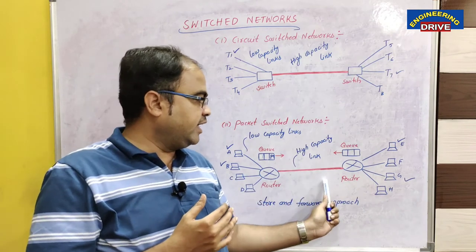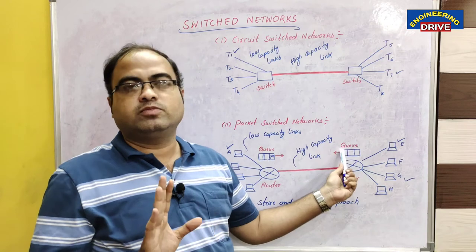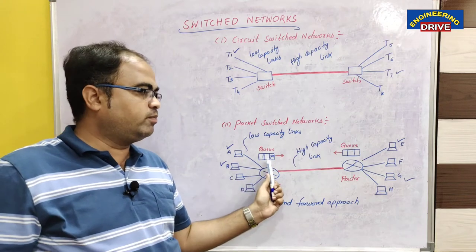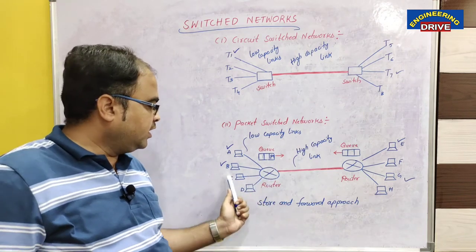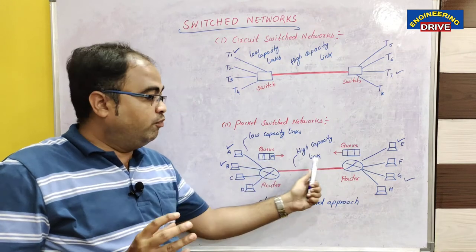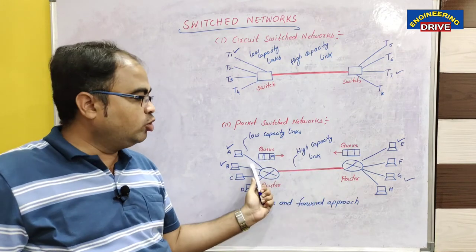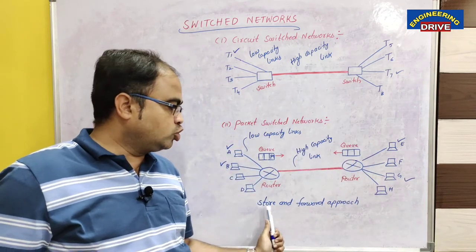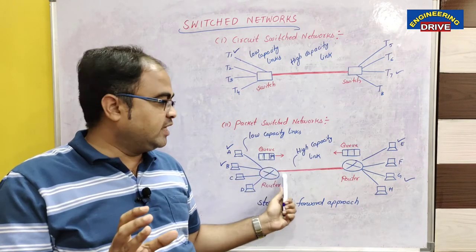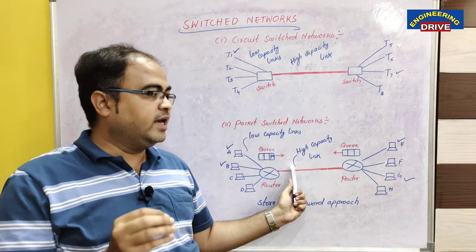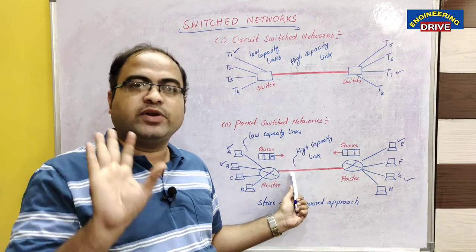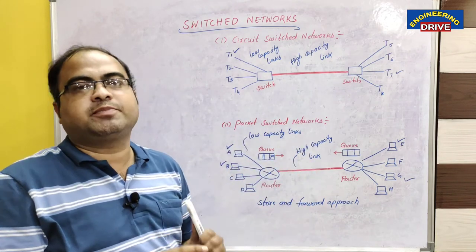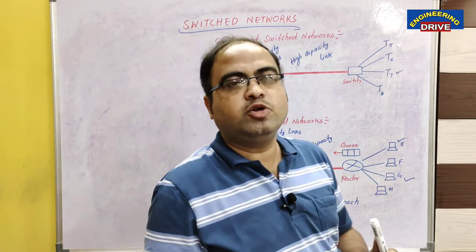The same applies from the receiver side: if a computer wants to communicate with a computer at the sender side and the high capacity link is busy, its packets will be placed in the queue. No matter how many computers want to establish communication, their respective packets will be placed in the queue, and only when the high capacity link is free will the packets be delivered to the required destination. That is why we call this the store and forward approach: store the packets when the link is busy, forward the packets when the high capacity link is free. This is how packet switch networks and the internet work.